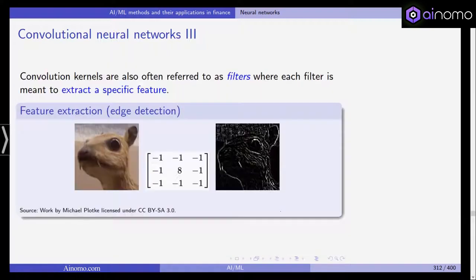The convolution kernels are also often referred to as filters because depending on what kind of filter or convolution you're using, you're extracting a different specific feature. For example, in this feature extraction, we're trying to detect edges. You can see that here.